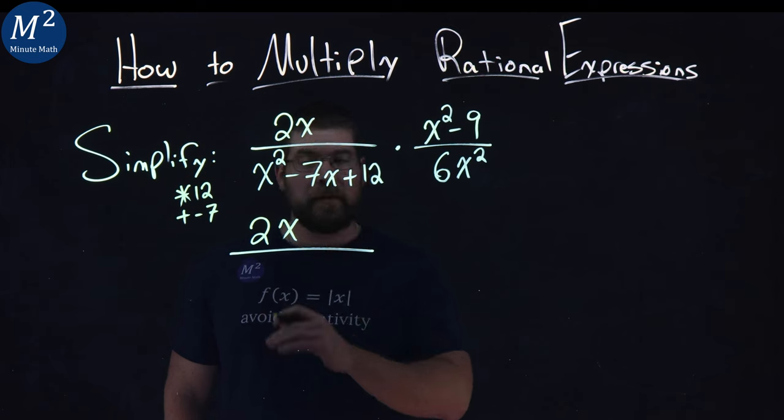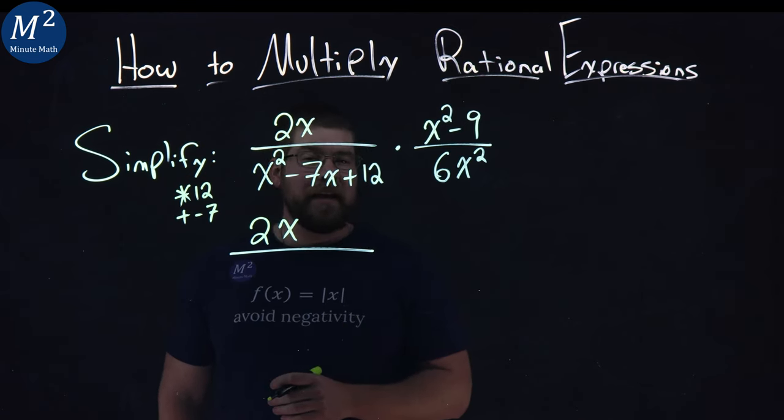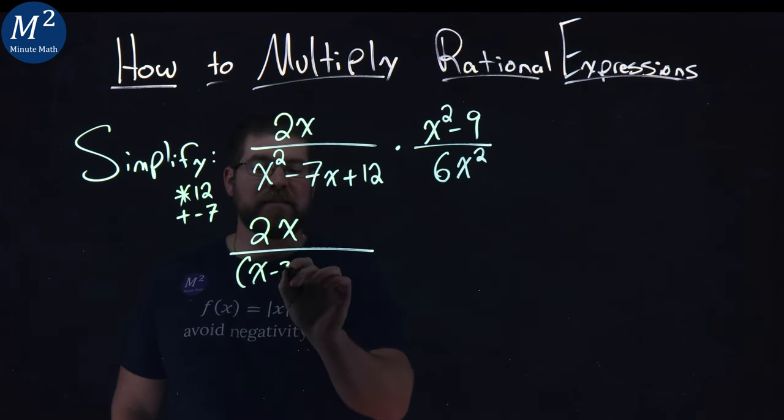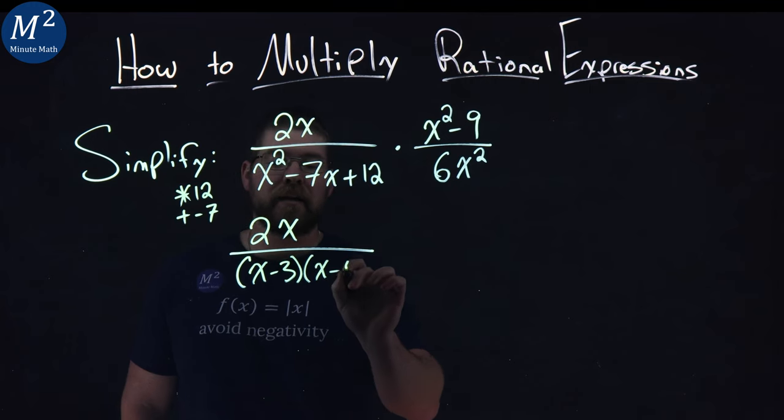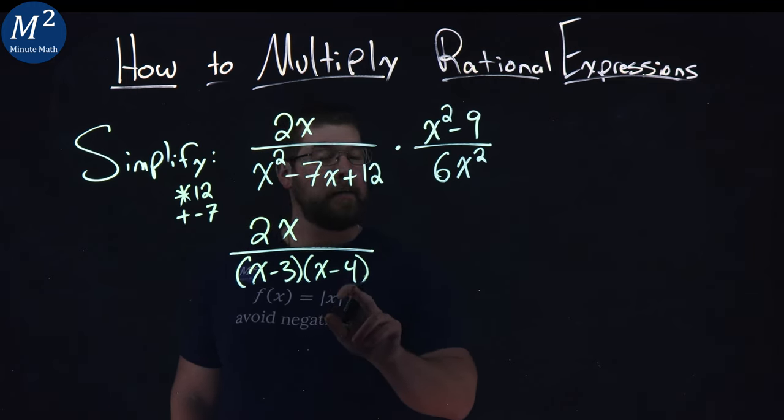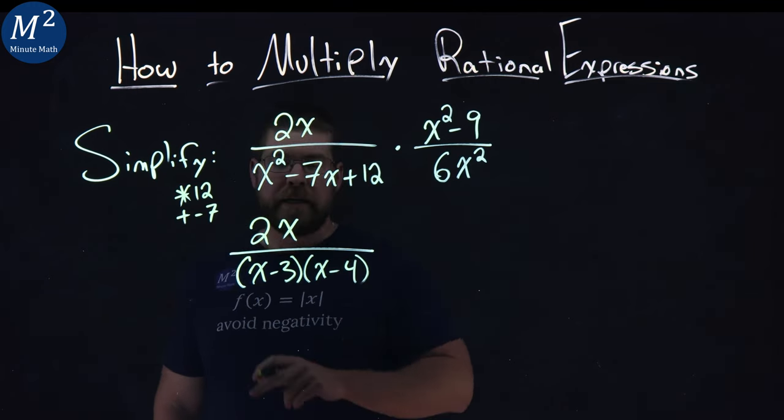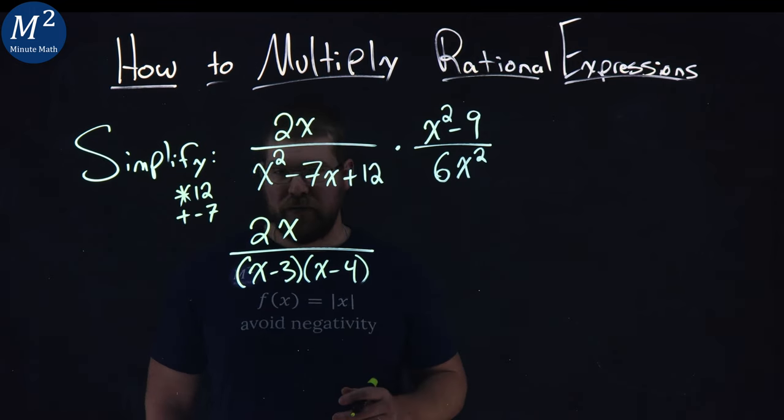All right, multiply by 12, add to be a negative 7, and I'm thinking a x minus 3 and an x minus 4. Negative 3 times negative 4 gives me a positive 12, but if we add them together, we get a negative 7.